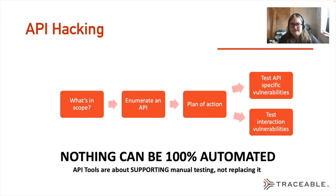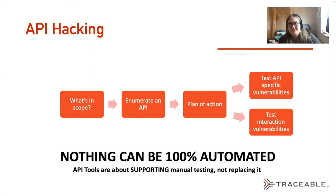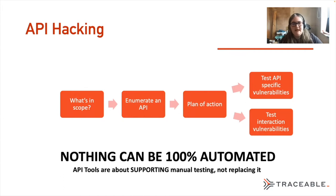From this you can see that nothing can be 100% automated. The tools I'm going to be talking about support manual testing — they don't replace it. The same way that if you're on a defensive team, you know you can't use a single tool to solve all security issues. They're about supporting your existing processes and making things easier for you. If you use something like Traceable, you don't fire everyone on your security team — you use that to support the people doing manual testing and security, giving them a tool to help crunch all the data together.